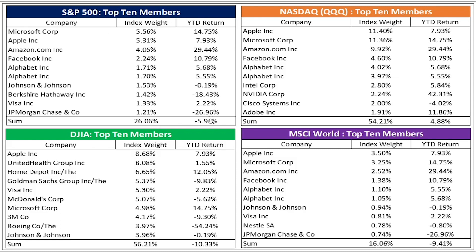The year-to-date performance of the S&P was down 6%, the Dow was down a little over 10%, and the MSCI World was down about 9.5%. One thing to keep in mind with the MSCI World — we're looking at these returns in US dollars — so about 1.5% to 2% of that negative 9.5% loss is due to currency, as some dollar strength has occurred this year.